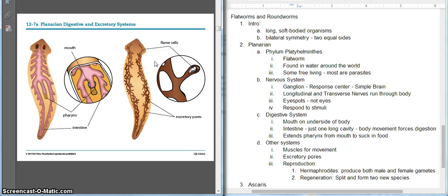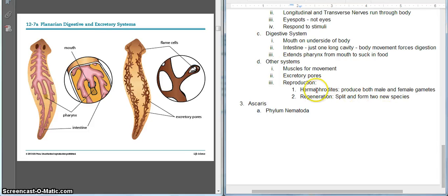Reproduction. These guys are really pretty unique here in their reproduction because they are hermaphrodites, meaning that one single organism, one single planarian, is going to be able to produce both male and female gametes. Kind of unique in that way. Very few other organisms are hermaphrodites, but the planarian is. But really, their claim to fame, and what most people know the planarian for, is regeneration.